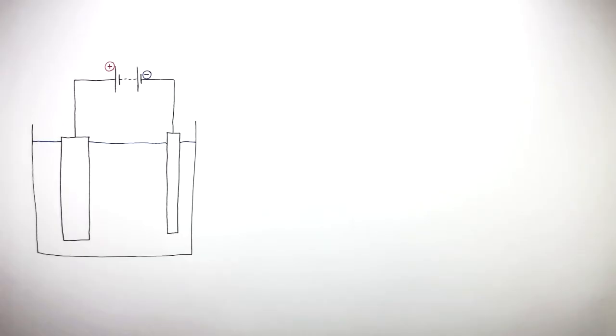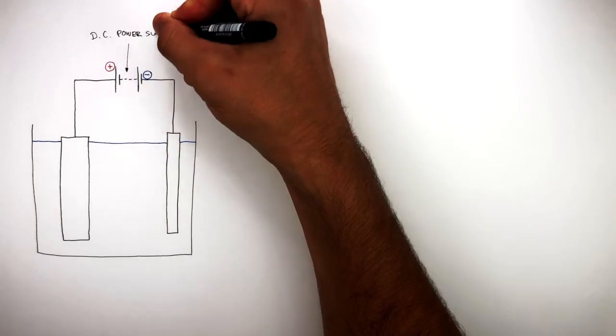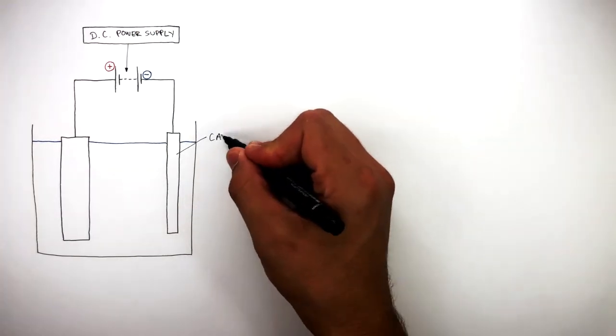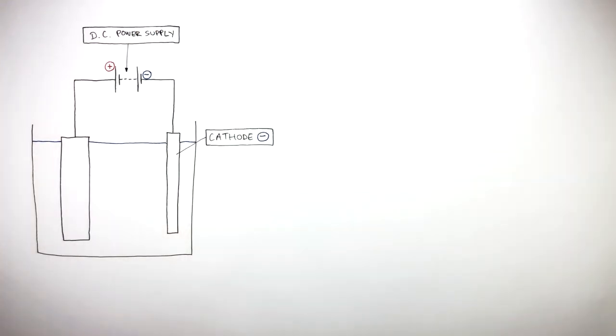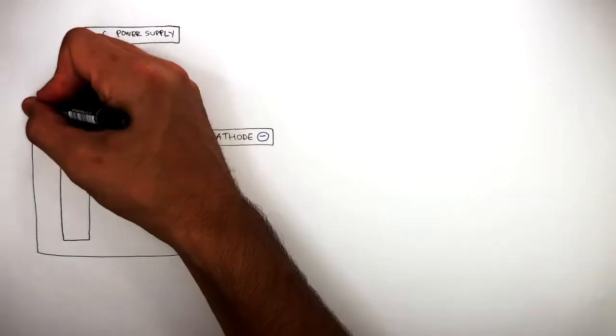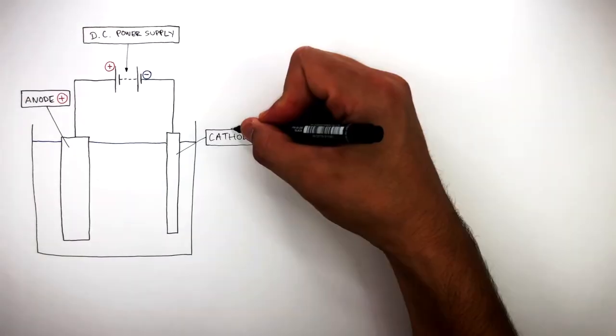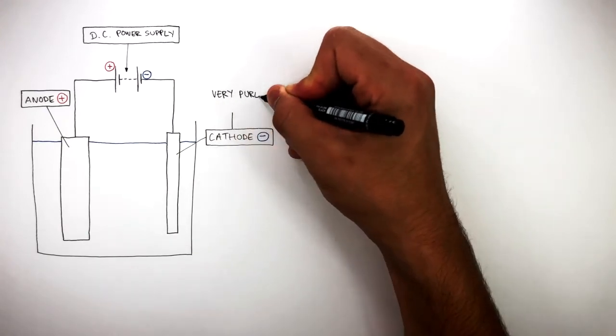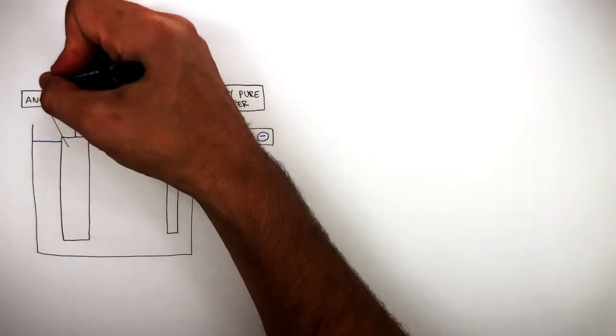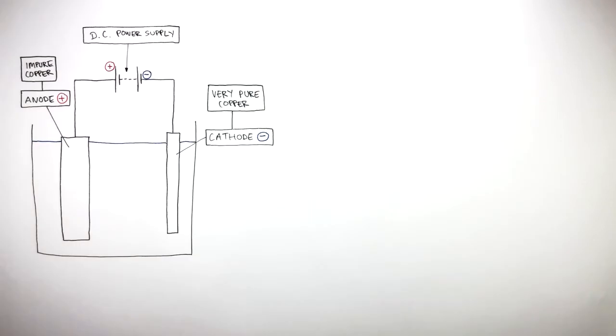The next stage is to use electrolysis where this represents the DC power supply. This represents the cathode, which is the negative electrode, and this represents the anode, which is the positive electrode. The cathode is made of very pure copper and the anode is made of impure copper which was obtained from the smelting of the copper ore.